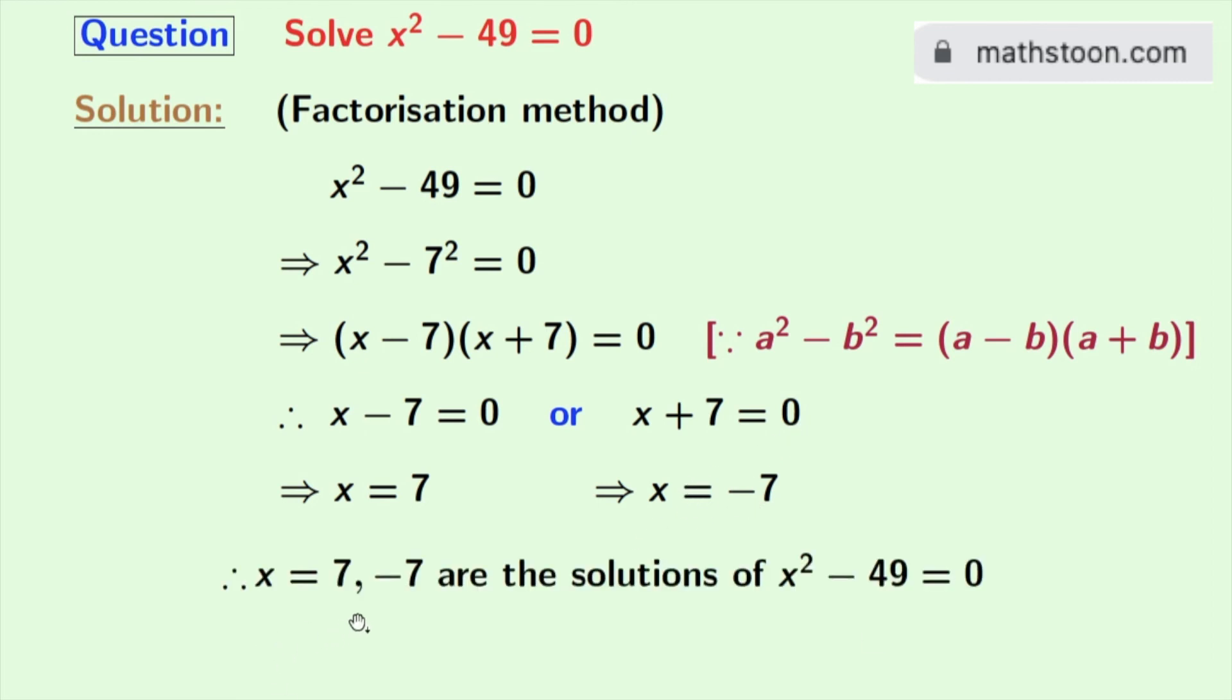So x is equal to 7 and minus 7 are the solutions of the equation x squared minus 49 is equal to 0.